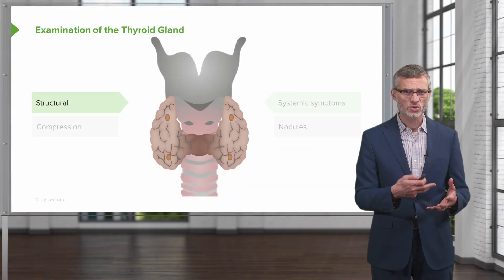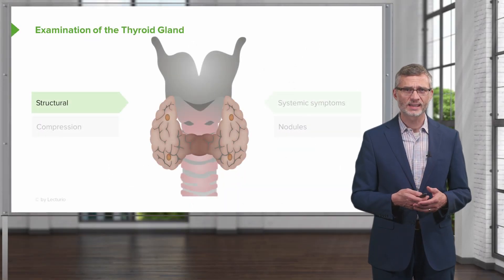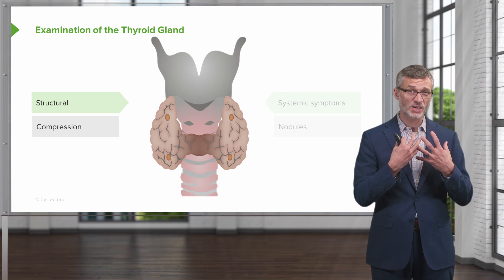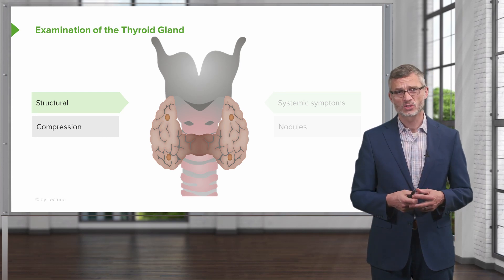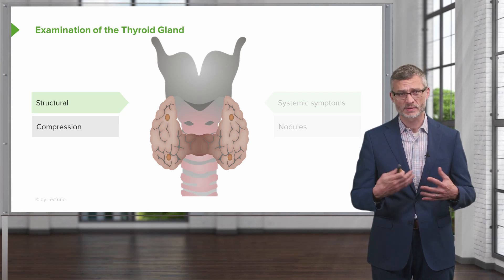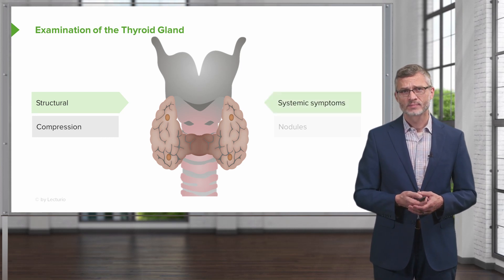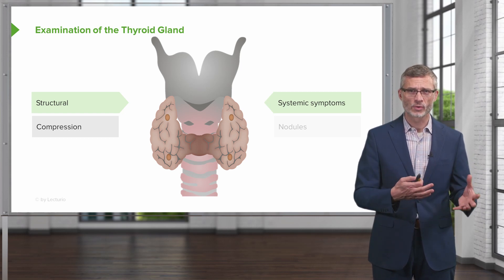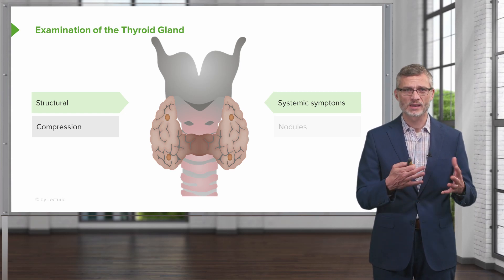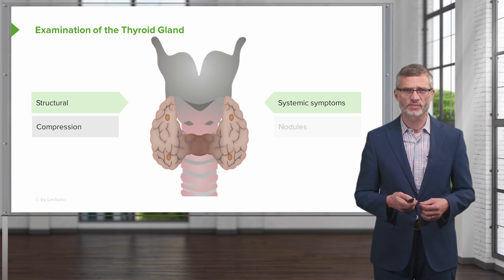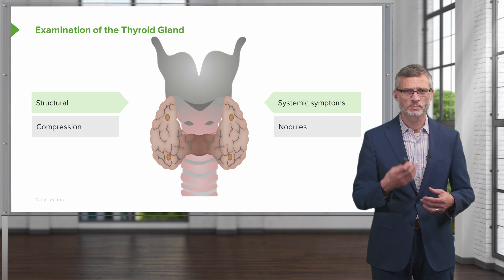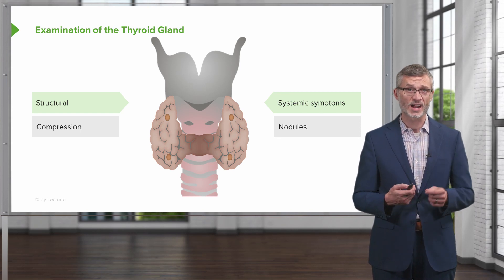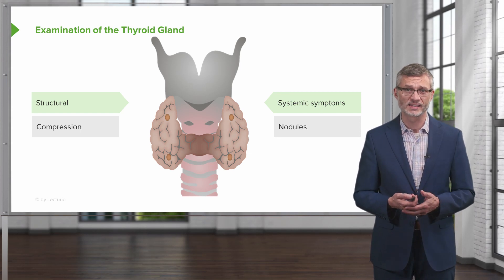Regarding the structure of the thyroid gland, if it's enlarged, it can cause compression of the small airways or potentially even the great vessels. You're also going to be looking for systemic manifestations of thyroid disease and, on palpation, potentially trying to identify small nodules within the gland itself.